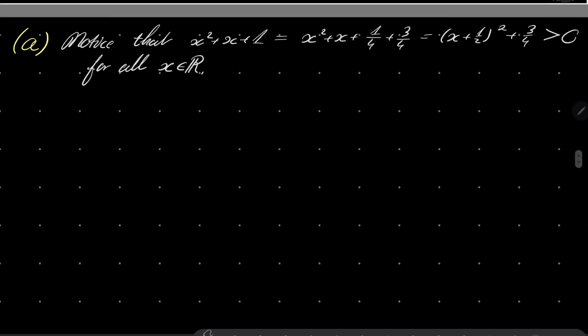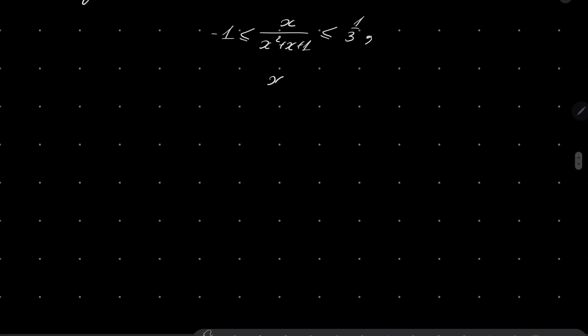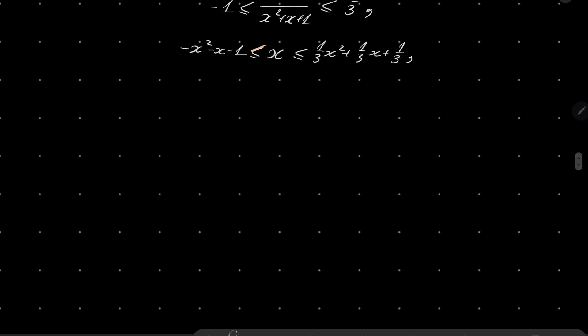And now we will have the following equivalent inequalities. This inequality, we know that we can safely multiply by this denominator, and it's equivalent to the following. Now what we wish to show is two separate inequalities, this one and then this one. So let's start with the first one.